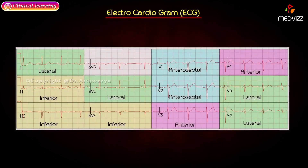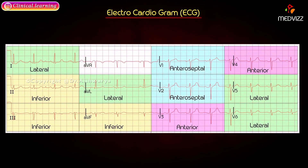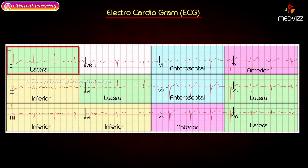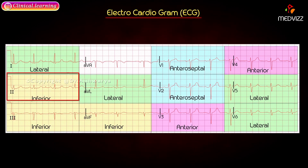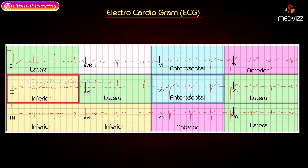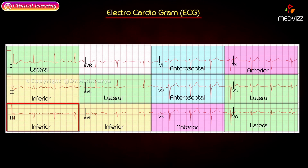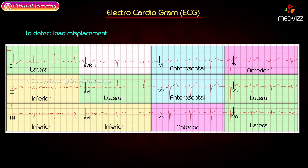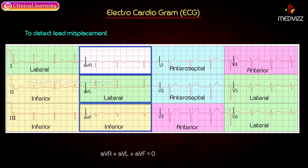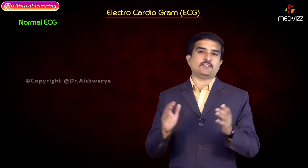Regarding ECG lead regions: the high lateral region includes AVL and V1; the inferior region includes leads 2, 3, and AVF; anteroseptal includes V1 and V2; anterior includes V3 and V4; and low lateral includes V5 and V6. To detect lead misplacement, the formula is AVR + AVL + AVF = 0, for example, 6mm + 2mm − 8mm = 0.